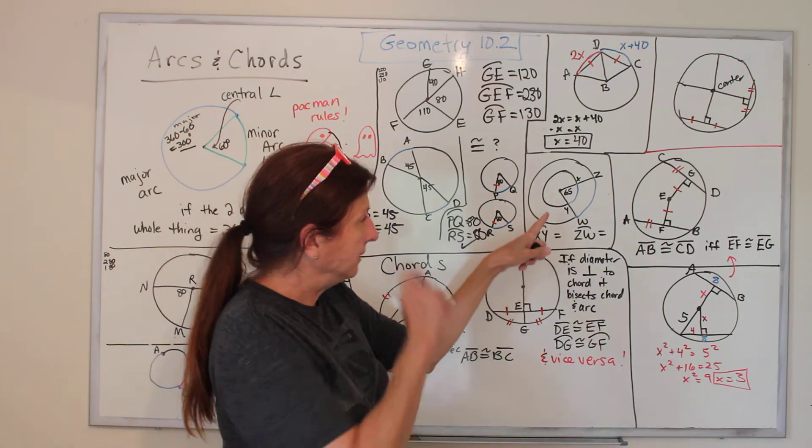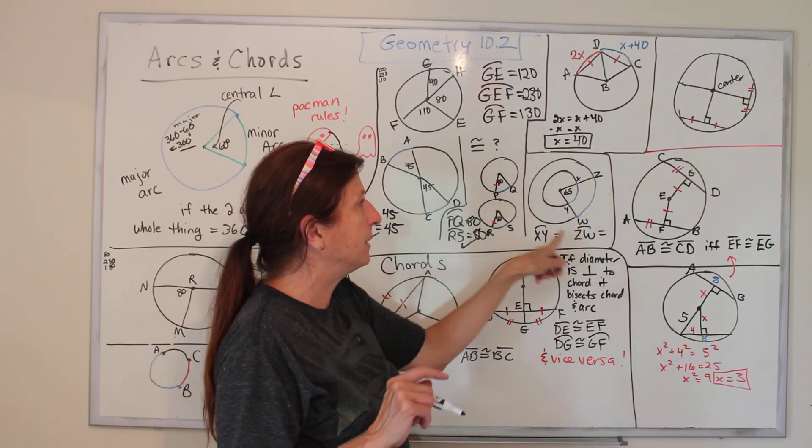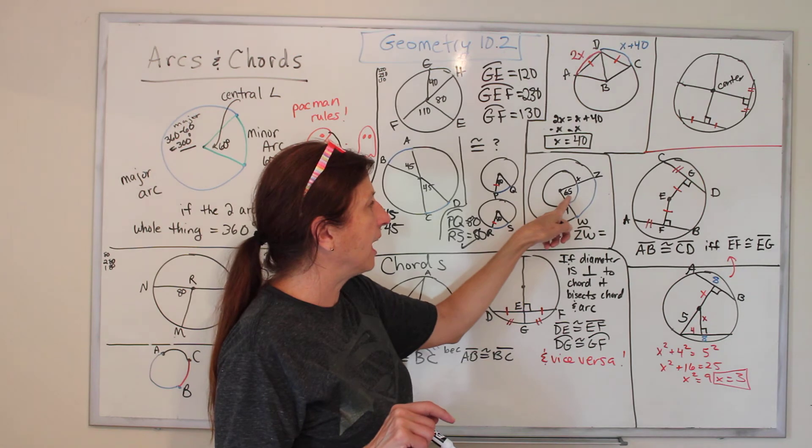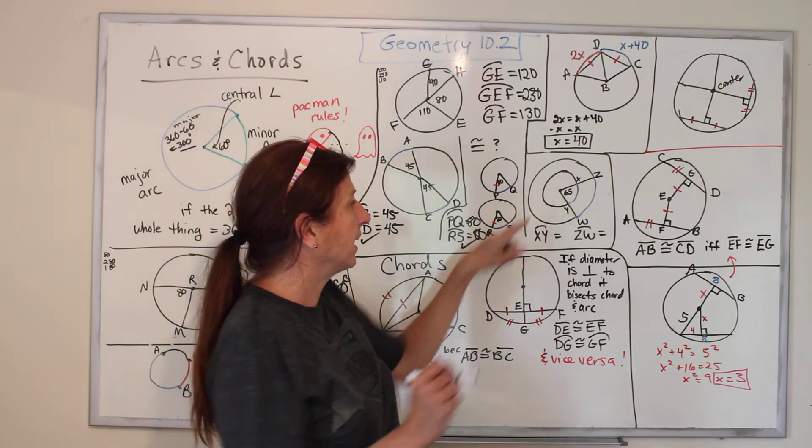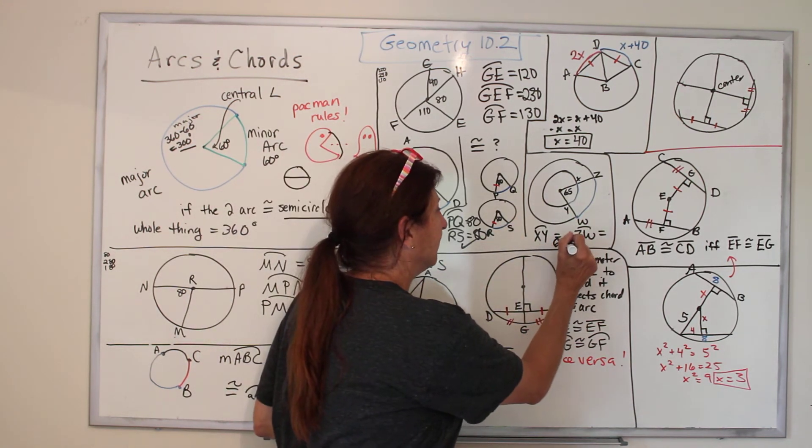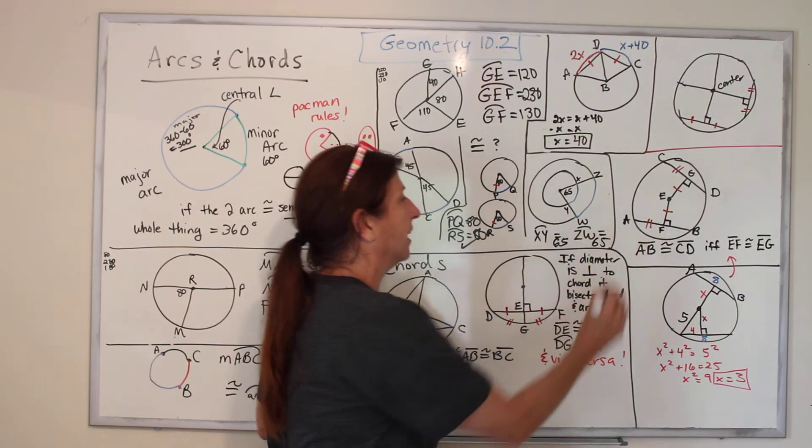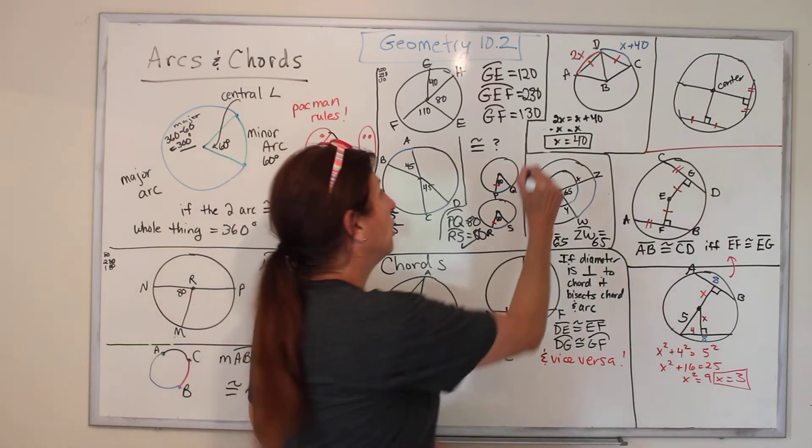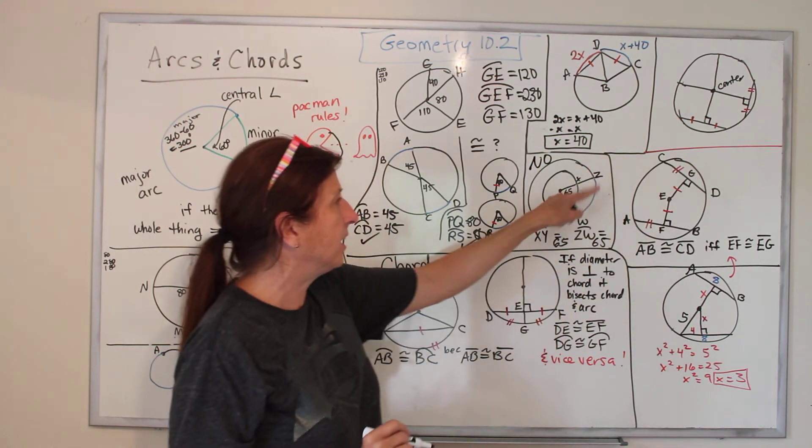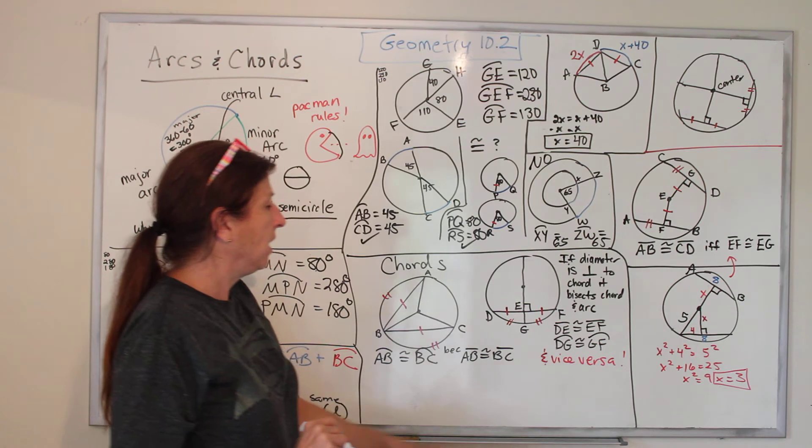How about this one? We have a little circle and a big circle, and it's 65 in the middle. So arc XY is 65, and arc ZW is 65. Are they congruent? No. This one's bigger. You can tell the blue line is bigger.